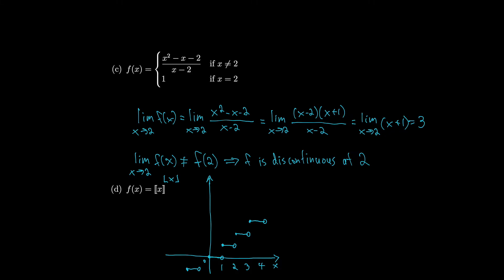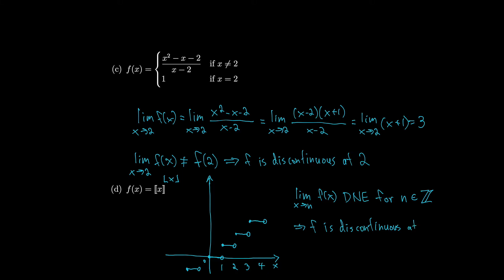Looking at the graph, approaching from the left and right at any integer gives different values — the left and right limits don't match. So the limit does not exist for any integer. The limit as x→n of f(x) does not exist for any integer n in ℤ. Since the limit doesn't even exist, it can't equal the value of the function, so f is discontinuous at every integer n in ℤ.